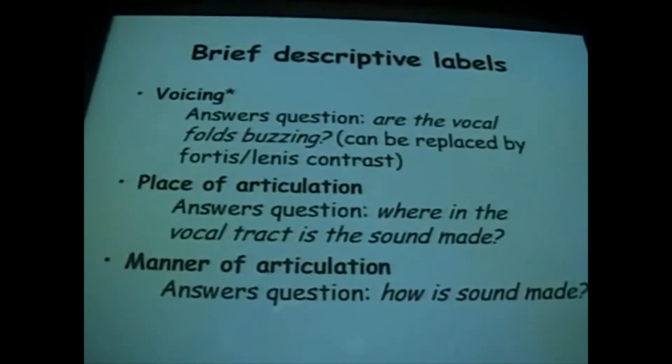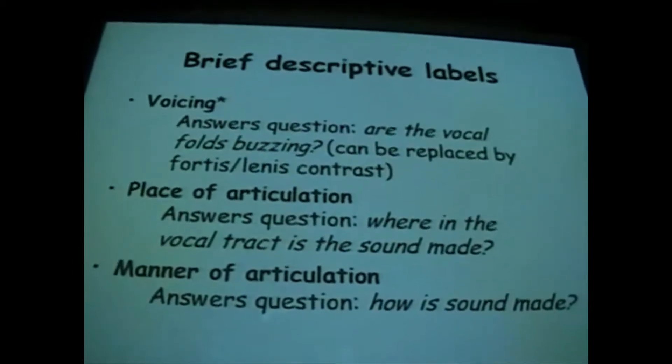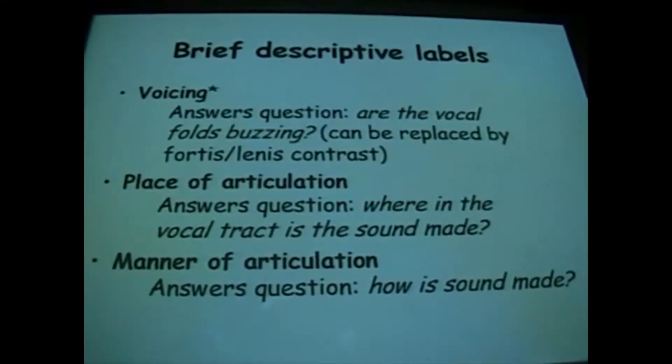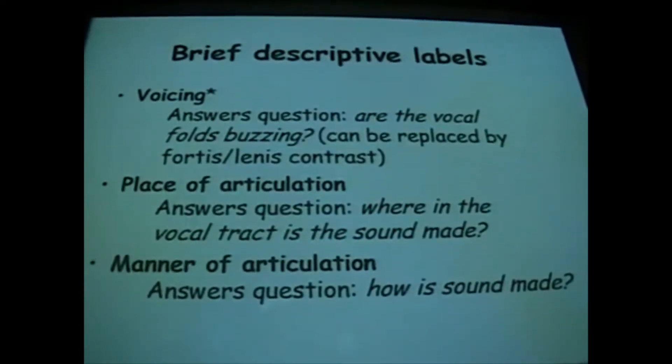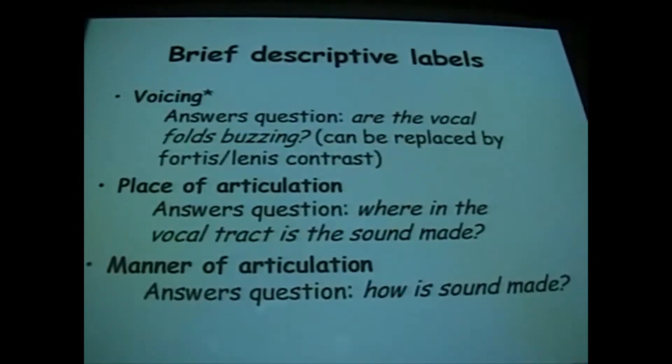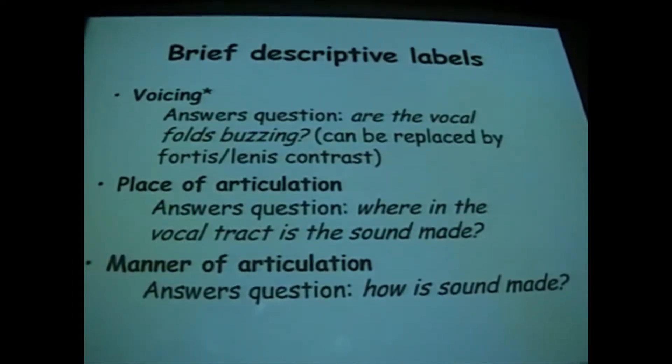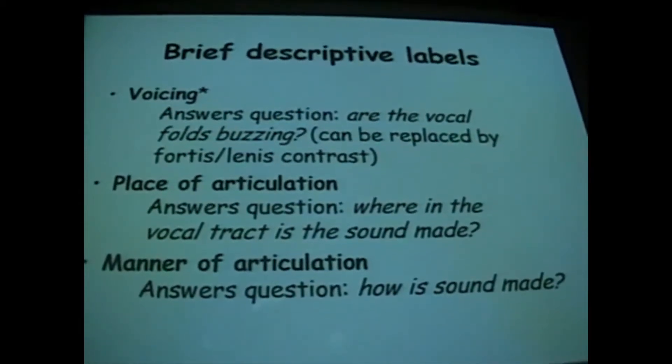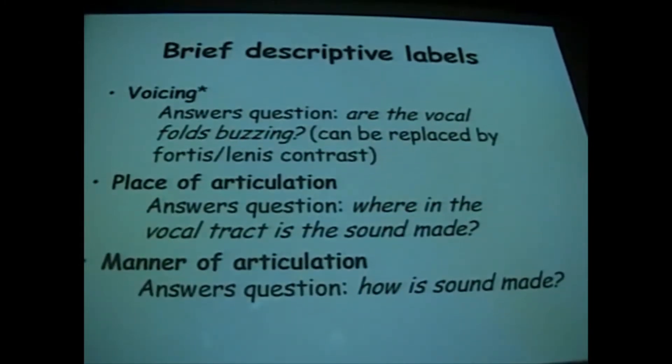You see here the brief descriptive labels. These are usually two or three terms. The first component is voicing, which answers the question: are the vocal folds buzzing? The vocal folds here in the voice box. If we want the technical term, we refer to the space between the vocal folds as the glottis. So this refers to the state of the glottis. We say voiced or voiceless, but we can replace this by fortis and lenis. And indeed, for a language like English, it's a sensible thing to do.